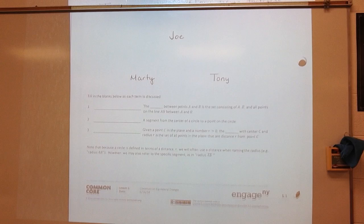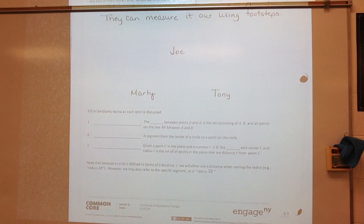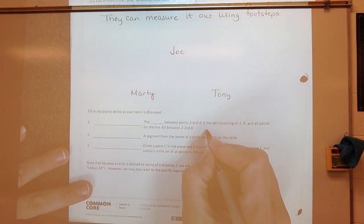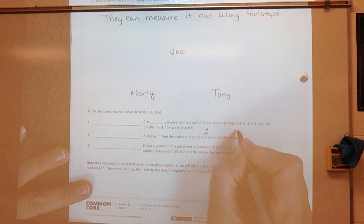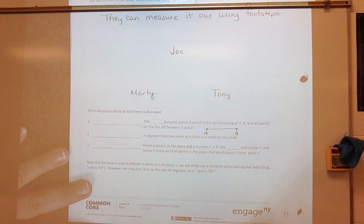All right, let's look at the second part of this. The second part says, fill in the blanks below as each term is discussed. All right, so the blank between point A and B is a set consisting of A, B, and all points on the line AB between A and B. All right, so what that is talking about is it's talking about, let's say I have point A, and let's say I have point B. I'm looking at everything that is between A and B, including A and B.